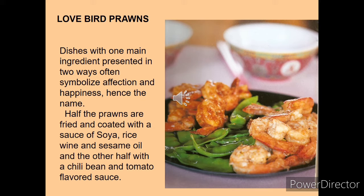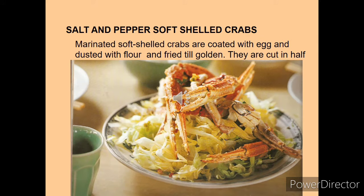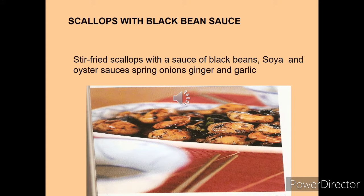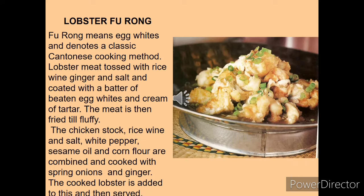Love bird prawns: half the prawns are fried and half are cooked in another style, then mixed together at the end. Salt and pepper soft-shelled crabs: marinated soft-shelled crabs are coated with egg, dusted with flour, and fried until golden. Scallops with black bean sauce: stir-fried scallops with a sauce of black bean, soya and oyster sauce; prawns, spring onion, ginger and garlic are also used for garnishing and generally accompanied with vegetables.